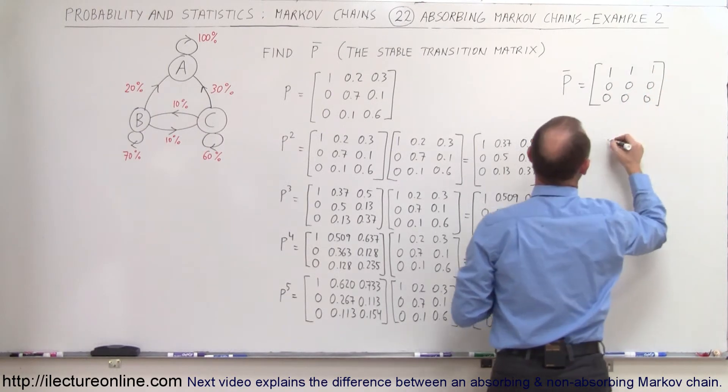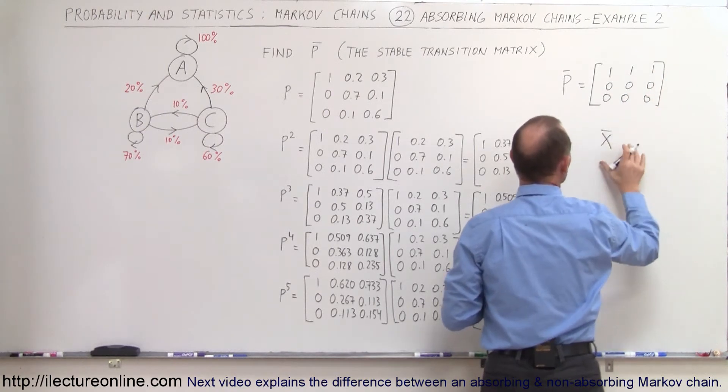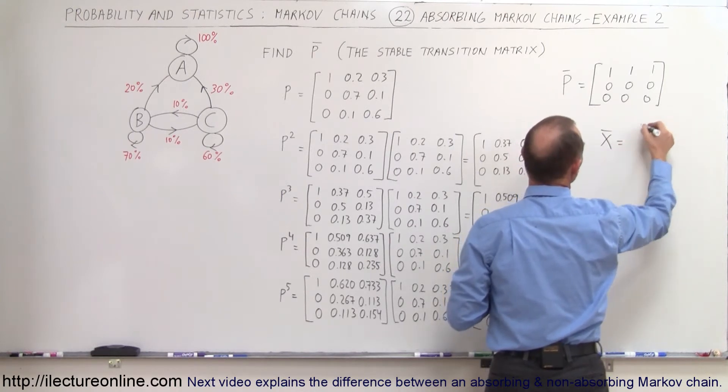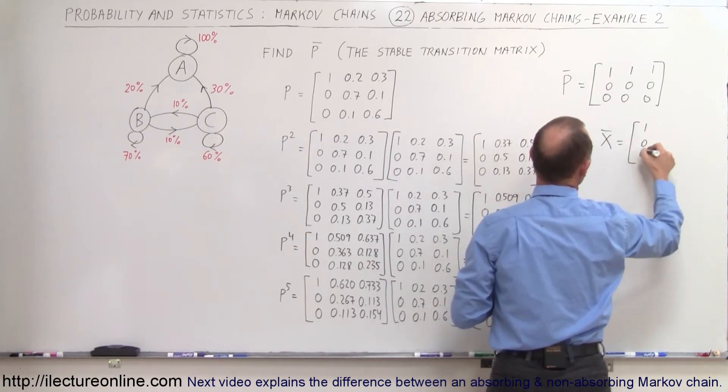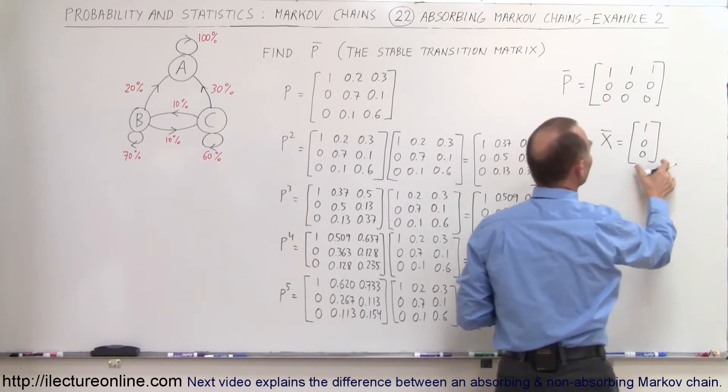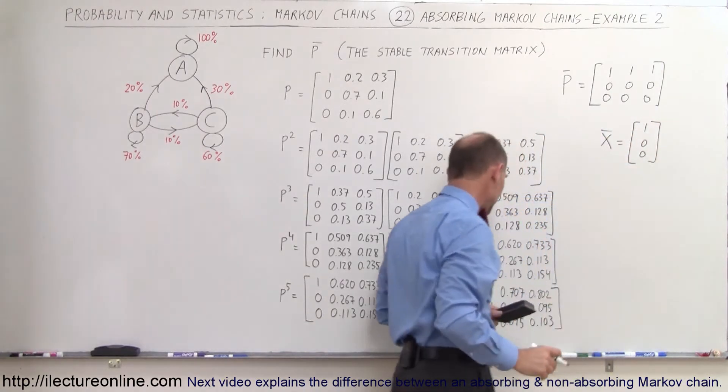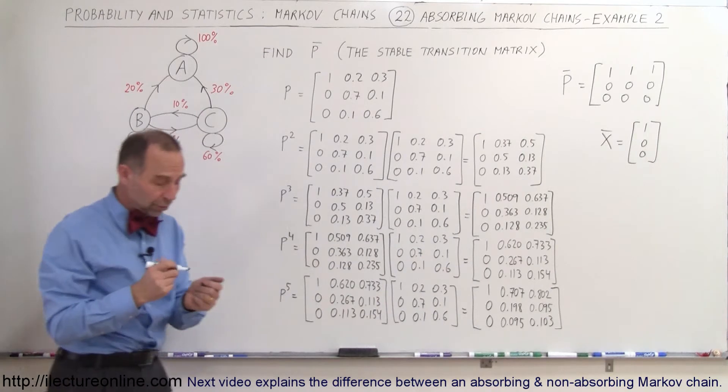Because that's an indication that the stable distribution matrix should then look like this, and of course that indicates that all the customers are at A and no customers are at B and C.